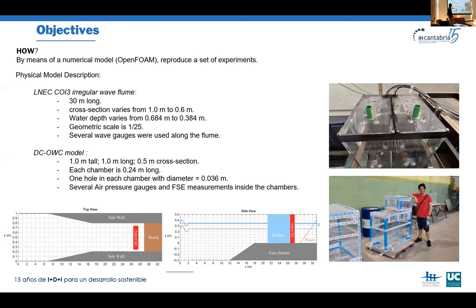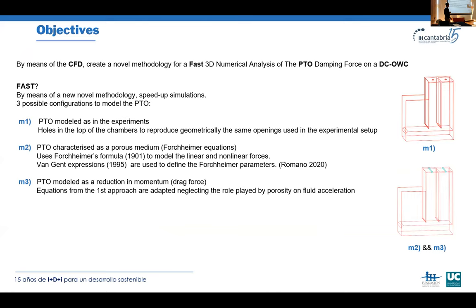Our dual chamber oscillating water column model is one meter tall, one meter long, and has a cross section of 0.5 meters. Each chamber has holes of 0.24 meters or shorter of 0.026 meters. We placed multiple air pressure sensors and free surface elevation gauges inside the chambers to measure all variables.